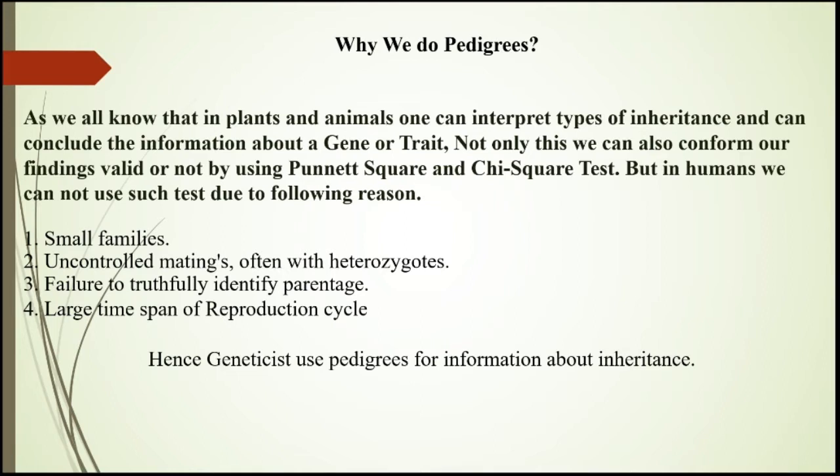For confirming our experiment, we do the Chi-square test to verify whether our experiment is right or wrong. But in human beings, you cannot do that. There are certain limitations. One is small families — in plants, one reproductive cycle gives thousands or nearly 100 seeds, but in human beings, in one reproductive cycle we can produce up to 4 children maximum, and that is also in a rare case.